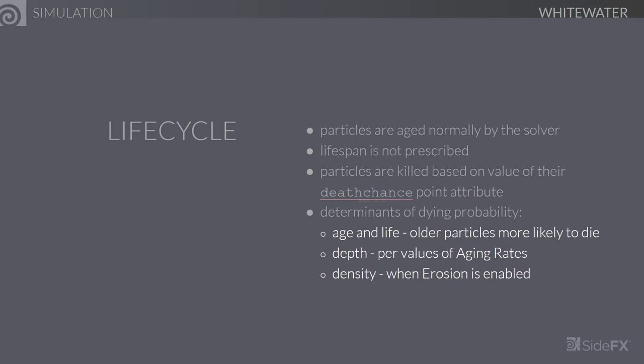We've made a subtle but important change to the life cycle of particles. The particles are now birthed by the solver, which also takes care of aging them normally, so that particles have an age attribute that stores the number of seconds elapsed since the particle was added to the simulation. However, the lifespan is no longer prescribed. The particles do have a life attribute, but this is more of a guide as to how long the particle should live, as opposed to a hard constraint. Particles are actually killed based on the value of their death chance point attribute, and the determinants of this dying probability are age, life, and depth.